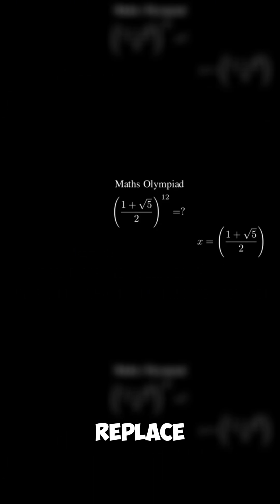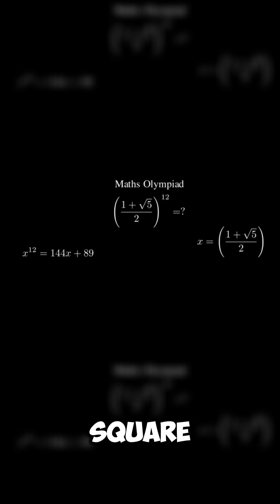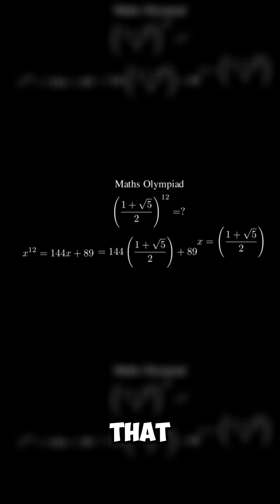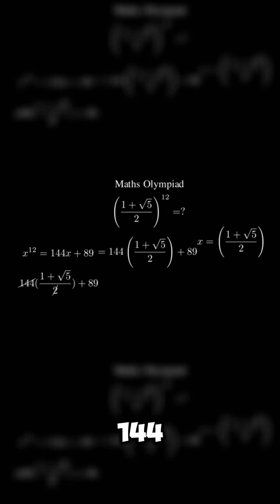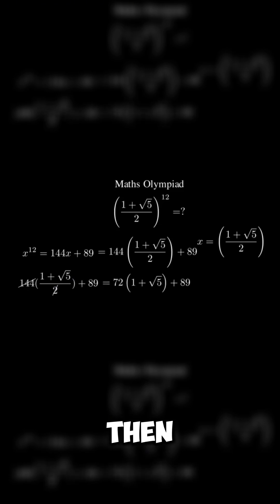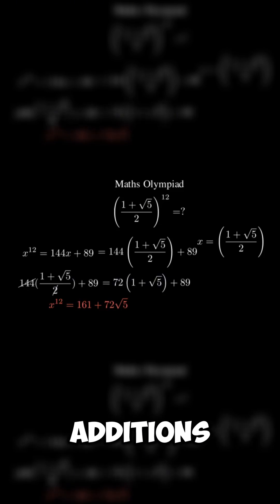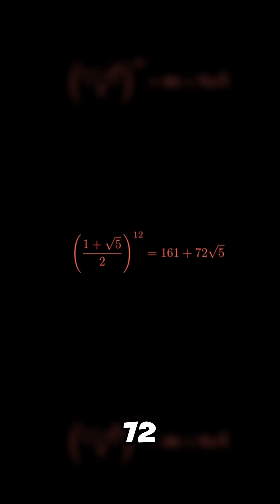Now we should replace x with 1 plus square root of 5 over 2. After that we can cancel 144 and 2, then do some multiplications and additions, and we should get 161 plus 72 root 5.